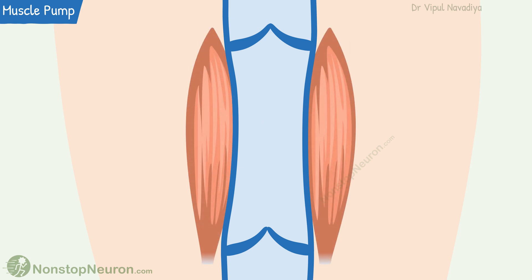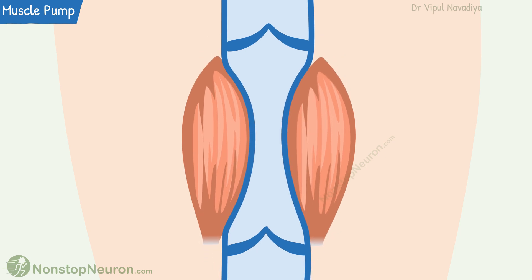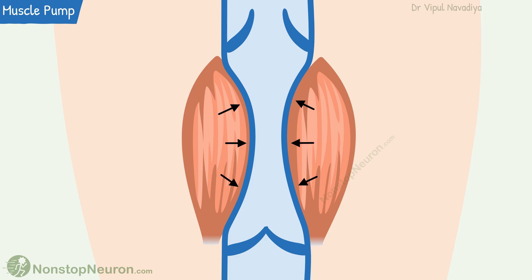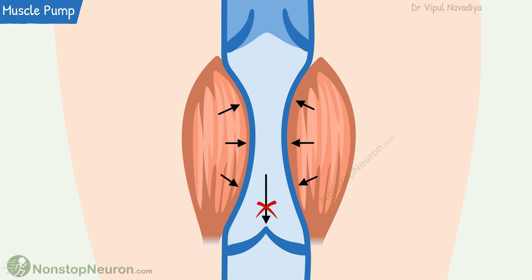Now many such veins lie in between skeletal muscles. When these muscles contract, they compress the vein, so there is a local increase in pressure inside the vein. This opens the valve towards the heart and the blood in this segment of the vein is pushed up. The increased pressure also tends to push blood down, but this results in the closure of that valve, so the back flow is prevented.